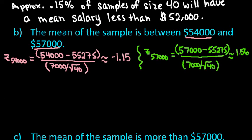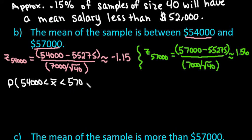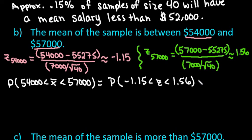The probability that x-bar is between $54,000 and $57,000 equals the probability that our z-score is between negative 1.15 and 1.56. To find the area in between, we do the area of the larger z-score minus the area of the smaller z-score.